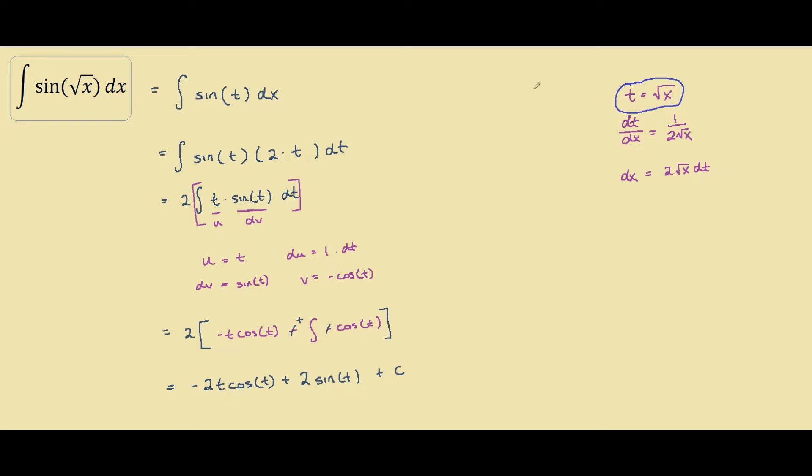And our last step is to replace the t's with square root of x to bring the integral back to the x world. So we're left with negative 2 times square root of x cosine of square root of x, plus 2 sine square root of x, plus c. And this over here is your answer.